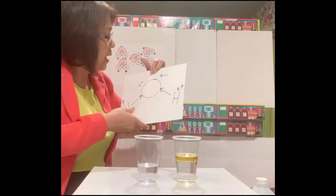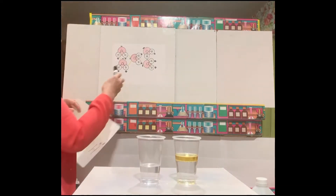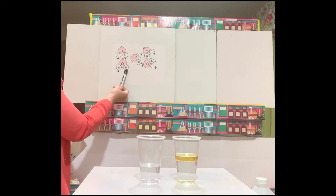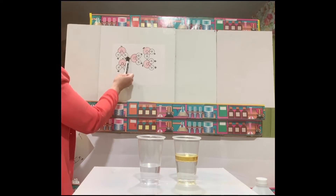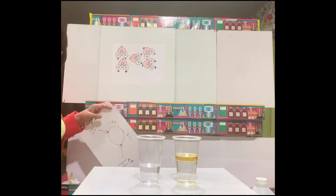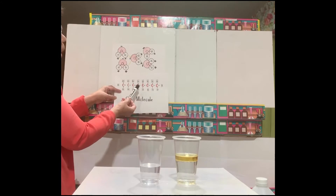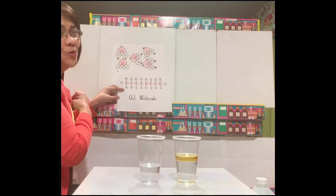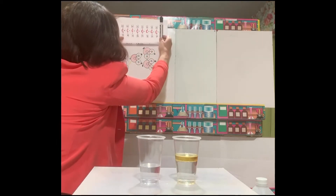When we have several water molecules together, as in the container, they are attracted to each other because of the positive end of hydrogen and the negative end of oxygen — there is attraction among the water molecules. When we add oil, there is no attraction between the oil molecule and the water molecule, because there are no positive or negative ends on the oil molecule. So the oil just stays on top of water.